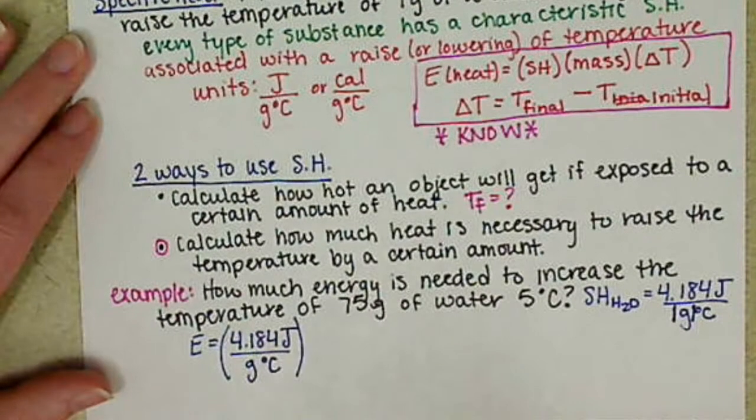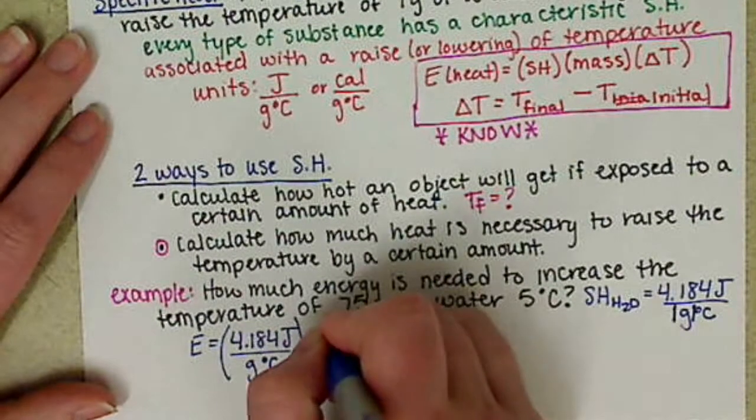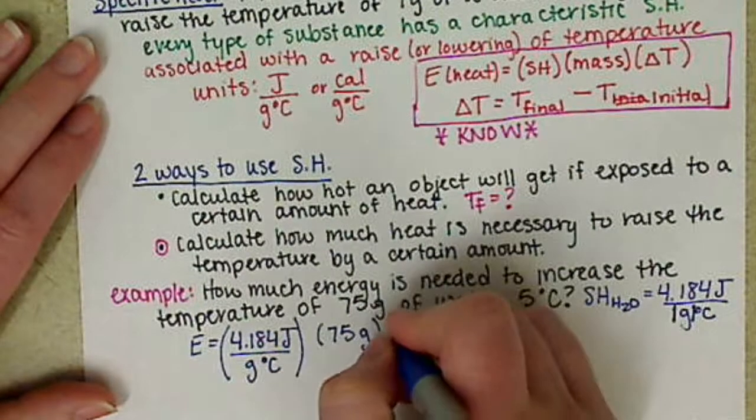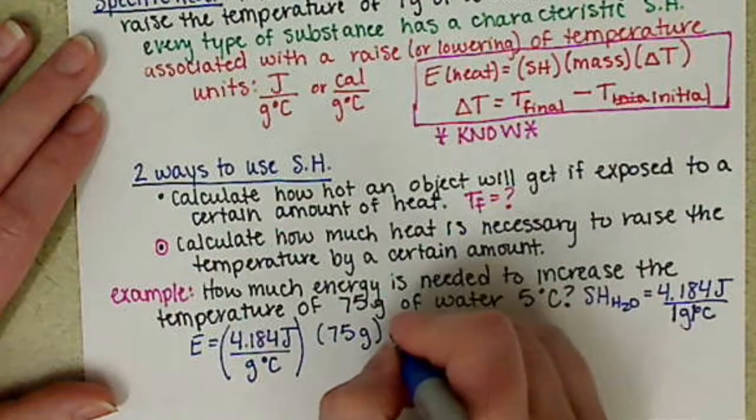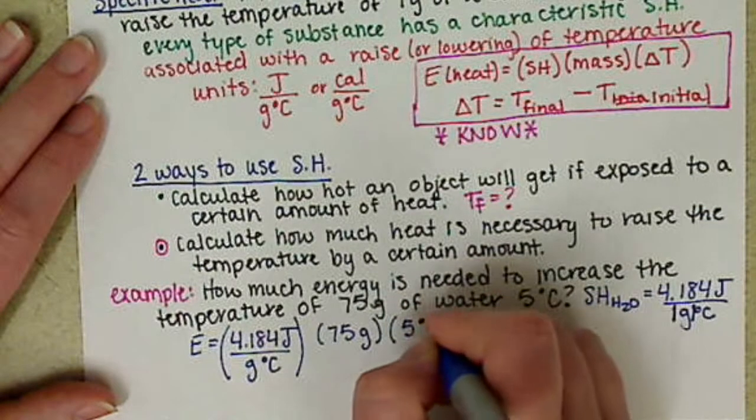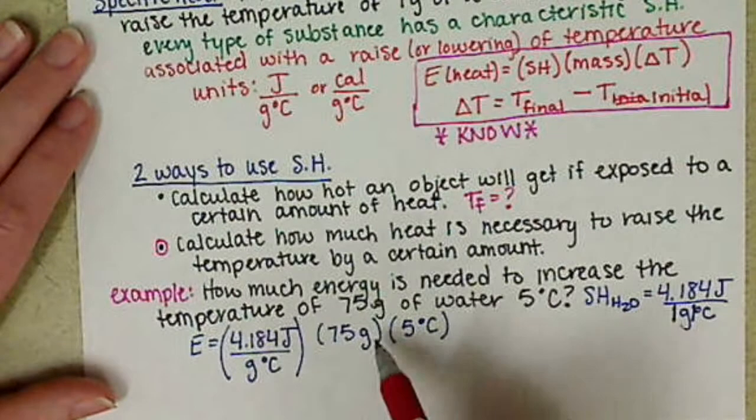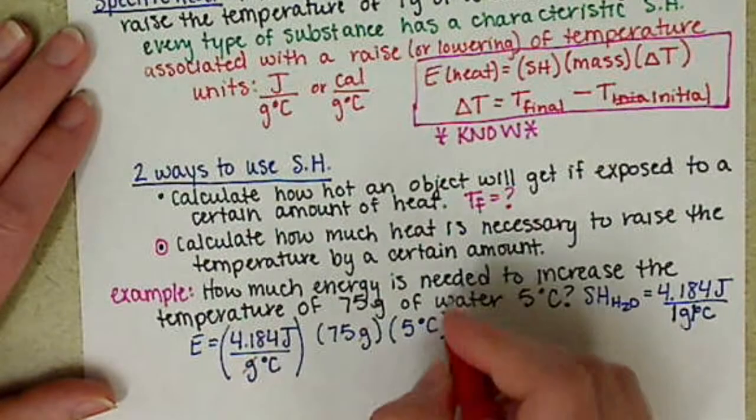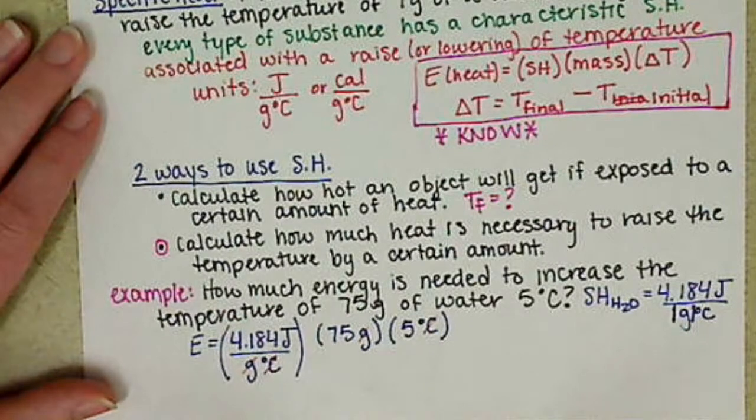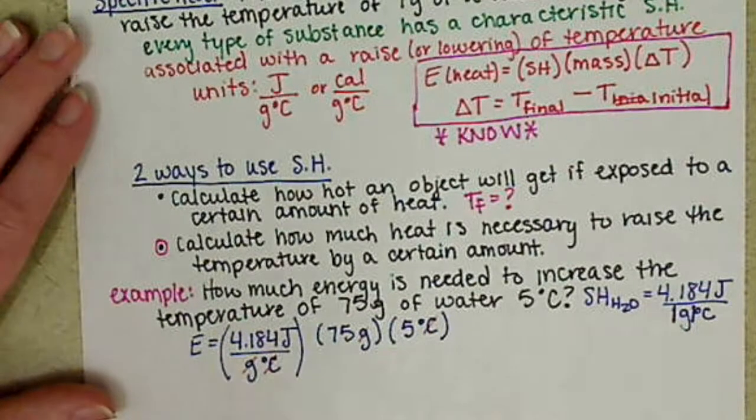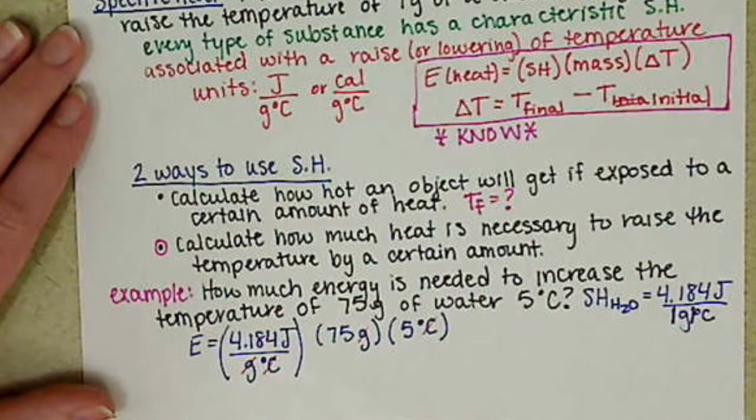We want to multiply that by our mass so we have 75 grams of water and our delta T, and we have 5 degrees Celsius. So my grams cancel, my degrees Celsius cancel, and I have joules left which is a unit of energy. So I have that equation set up correctly.